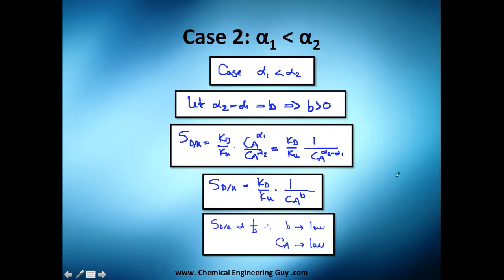That was case 1. Now let's do case 2. Case 2 is essentially what happens when alpha 1 is less than alpha 2. Well, in that case, alpha 2 minus alpha 1 will be B.